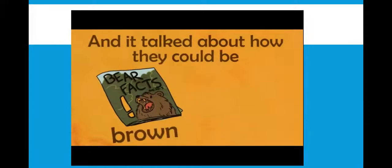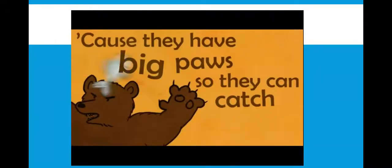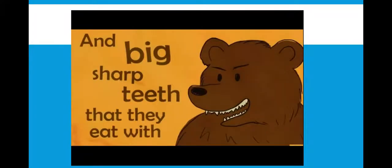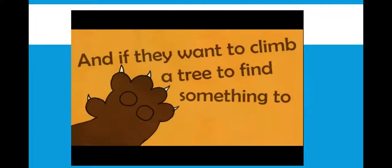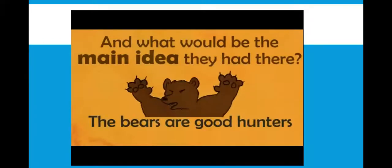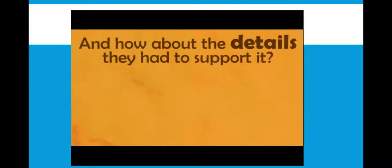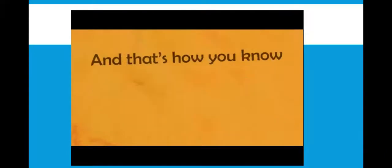Like I just read an article called Bare Facts, and it talked about how they could be brown or black, polar or grizzly or another type. They're all good hunters and they know how to fight because they have big paws so they can catch fish and big sharp teeth that they eat with. And if they want to climb a tree to find something to eat, their super sharp claws are all that they need. Now let's break it down. Let's dig deeper in the article I found. What's the subject? Bears! And what would be the main idea they had there? The bears are good hunters. That's most important. How about the details they had to support it? They have large teeth, paws, and claws. That's how you know hunting is a bear's job.